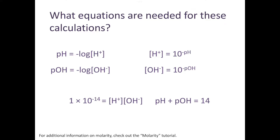If we know the pH of a solution, we can calculate the hydrogen ion concentration, or vice versa. Rearranging the equation, our hydrogen ion concentration is equal to 10 raised to the negative value of the pH. We also know that our hydrogen ion concentration times our hydroxide ion concentration equals 1 times 10 to the negative 14th — the ion product constant of water, Kw — which is a constant at 25 degrees Celsius.